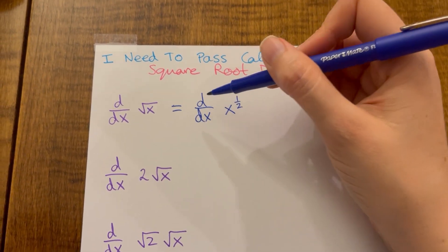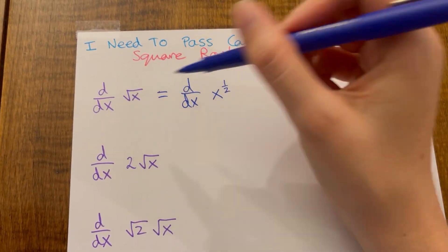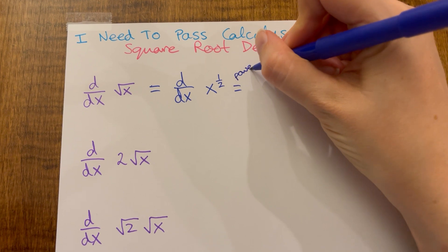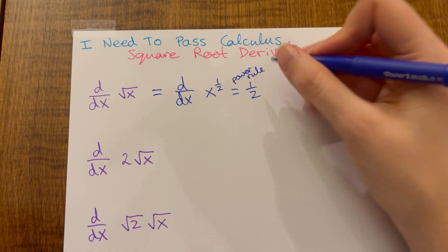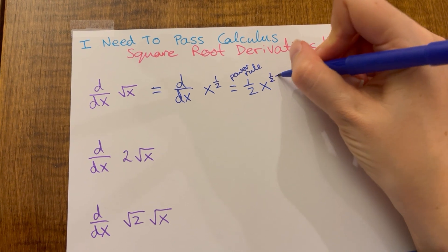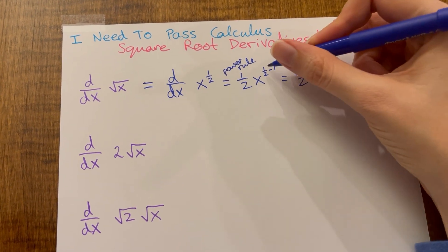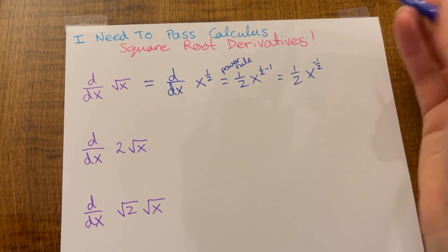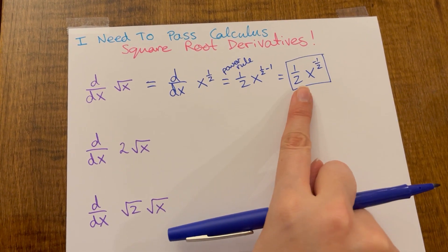The d/dx in front means I have not taken the derivative yet — I was just rewriting square root of x into x to the one-half. Now I use the power rule, where you bring down the one-half out front and subtract one from the exponent. So in front we have one-half times x to the one-half minus one, which is negative one-half. So if you have a plain square root of x, you rewrite it with an exponent so you can use the power rule.